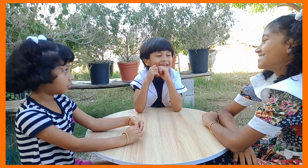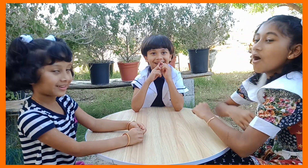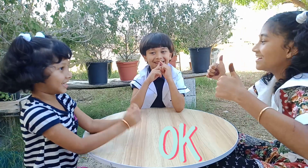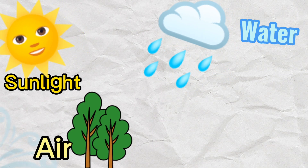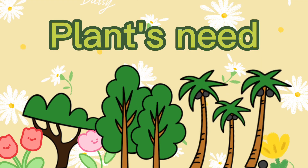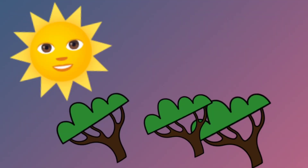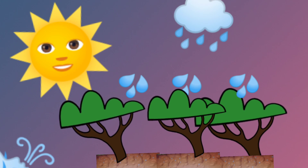Let's blend together. Okay. Sun, light, water, air, soil. Plants need what? Sun, light, water, air, soil.